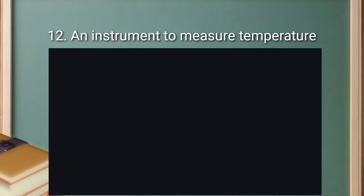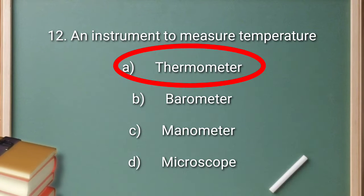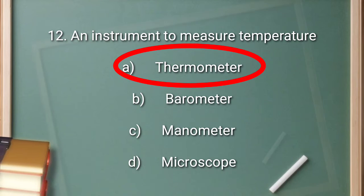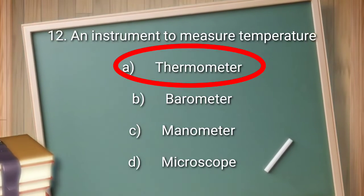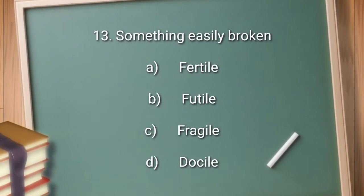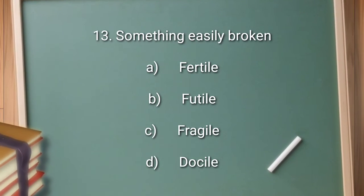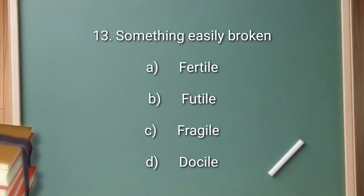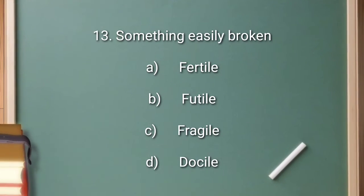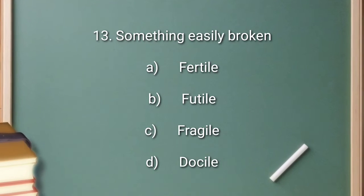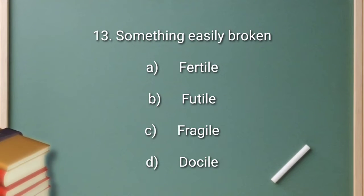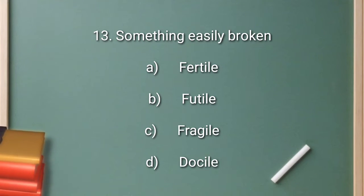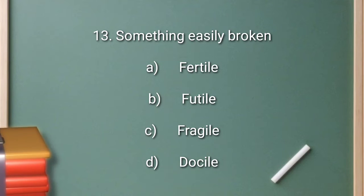The right answer is option A: thermometer. Question number 13: something easily broken. Option A: fertile. Option B: futile. Option C: fragile. Option D: docile.